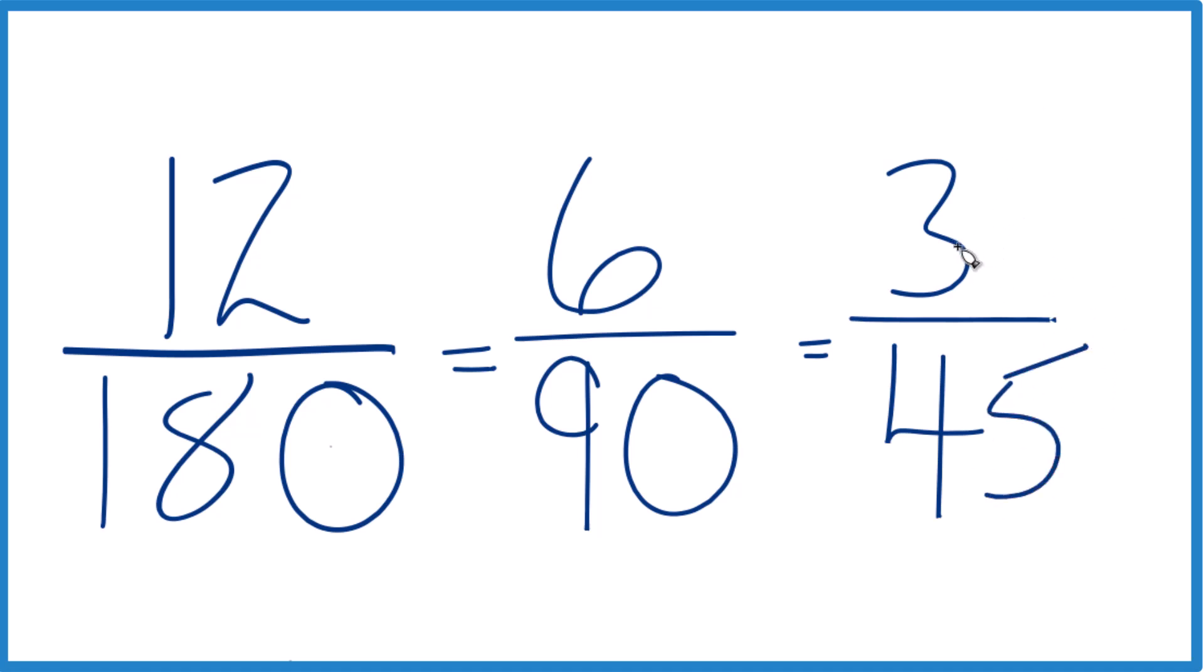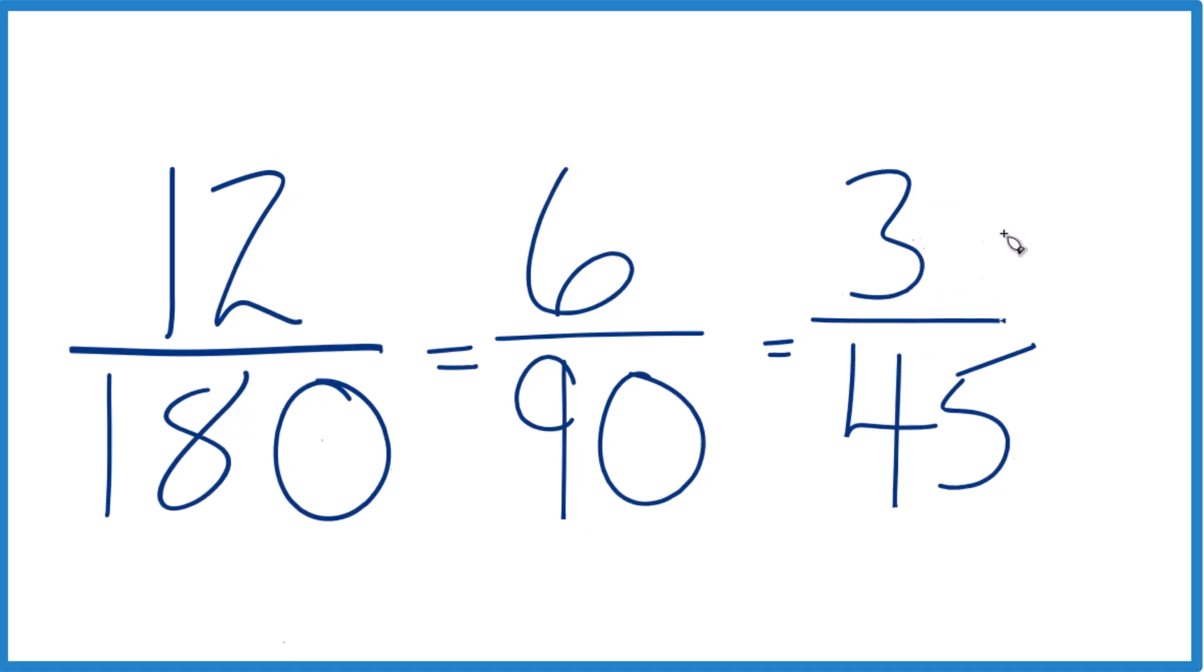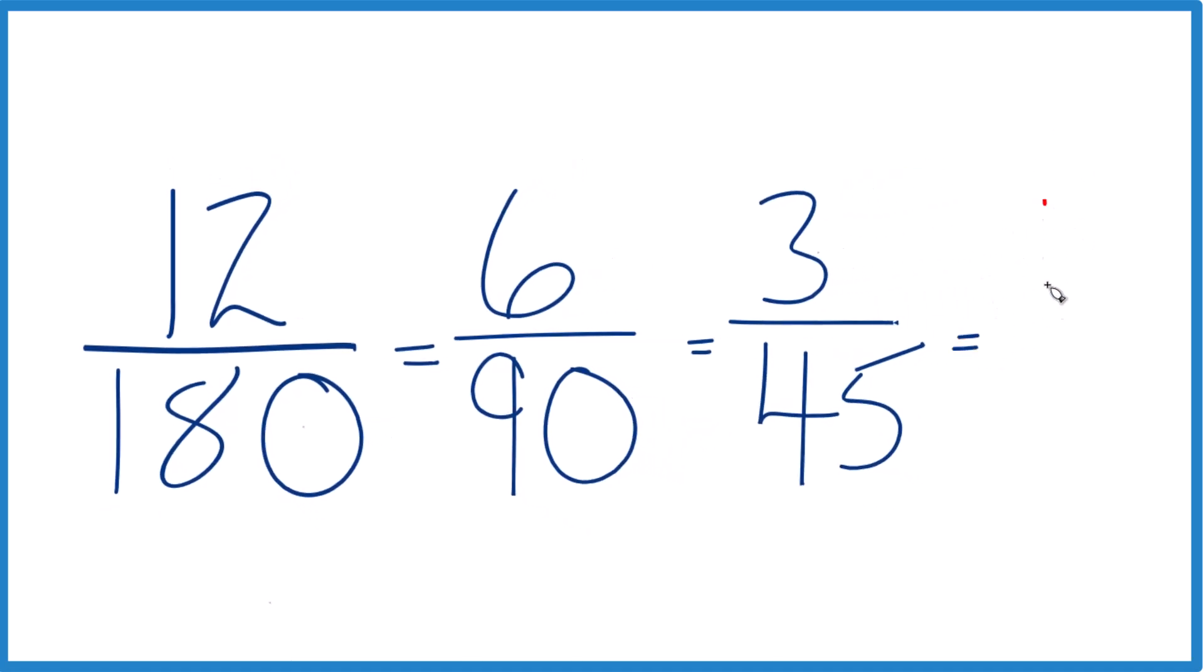Because 3 times 15 is 45. So 3 divided by 3, that would equal 1.